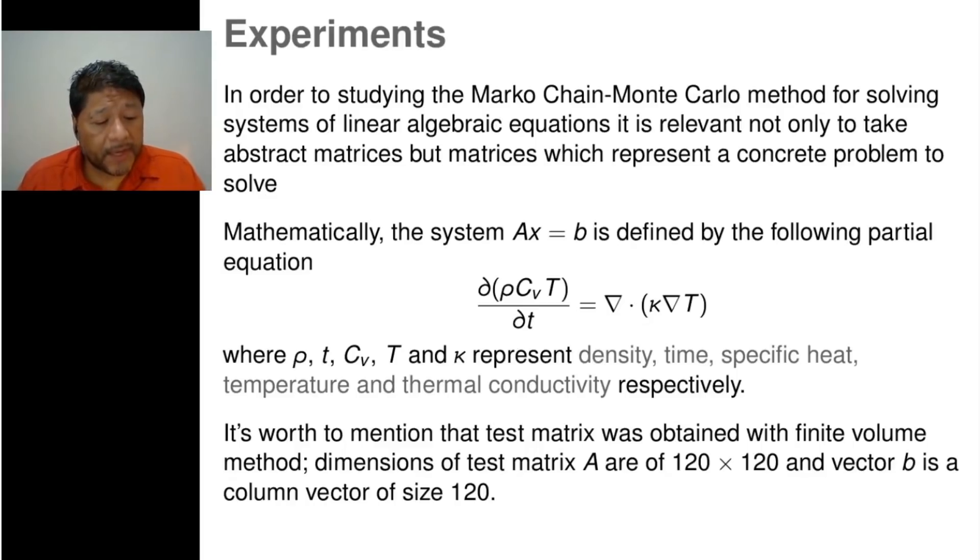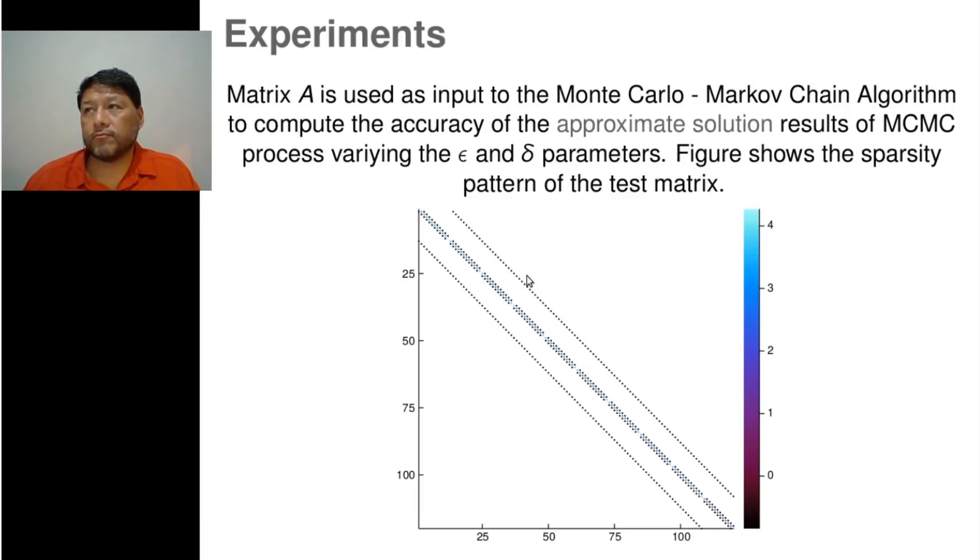In order to obtain a matrix A, this matrix is a sparse matrix with dimension 120 rows and 120 columns. And vector B is a column vector of size 120. In this figure, we can see the sparse pattern of the matrix A.